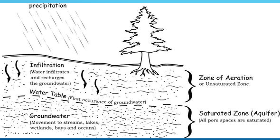This image illustrates the process of groundwater infiltration and the different zones in the soil where water is present. First is precipitation — rain or other forms of water falling from the sky. Then infiltration, the process where water from precipitation soaks into the ground and moves down through the soil. The zone of aeration, or unsaturated zone, is the area below the land surface where the spaces between soil particles and rocks contain both air and water, and water is not fully filling all the spaces.